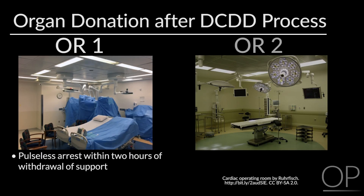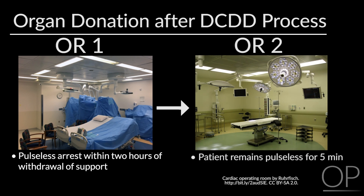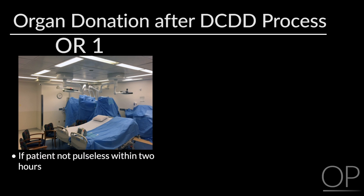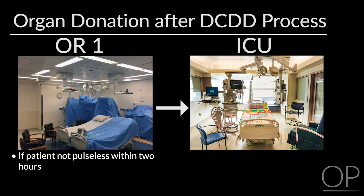If the patient progresses to a pulseless arrest within two hours of withdrawing the ventilator, the family will remain in the first operating room. The ICU attending and fellow will take the patient's body into a separate operating room where the organ recovery surgery will take place. When five minutes have passed after the pulseless arrest and there has been no spontaneous return of pulses, the patient is declared dead and the organ recovery surgery commences. If the patient does not die within the required timeframe for donation, they return to the ICU for continuing end-of-life care.